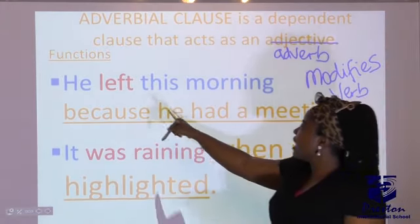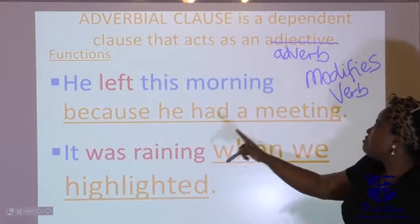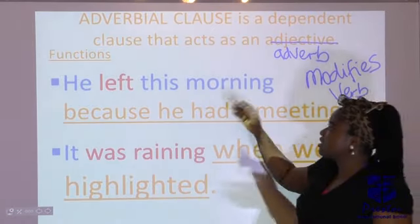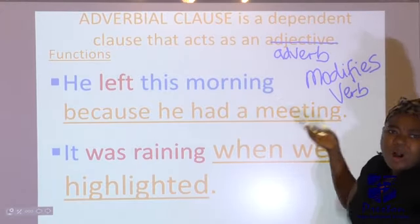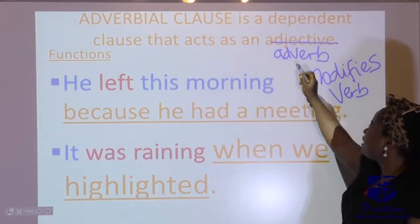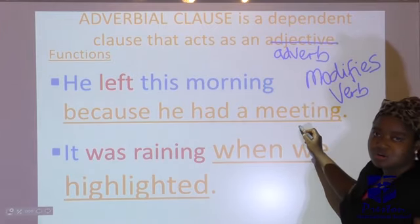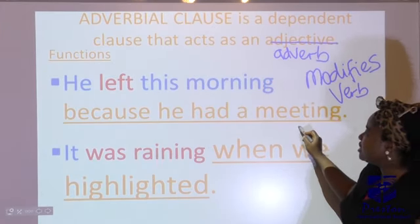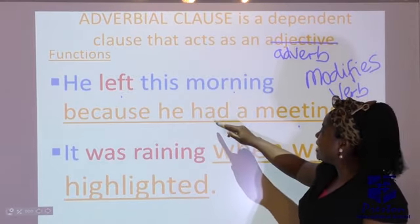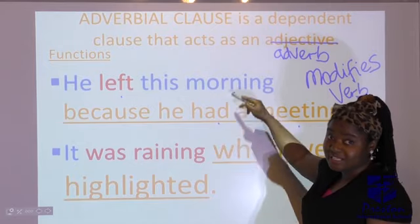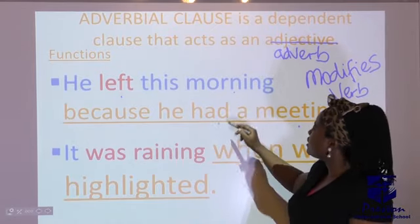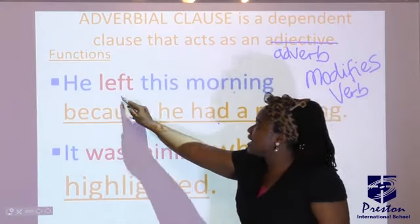In this sentence: 'He left this morning because he had a meeting.' Why did he leave this morning? Because he had a meeting — that is an adverbial clause of reason. It is not telling us more about 'morning'; it is telling us more about why he left. It stands in a similar position to an adjective but tells us the reason he left, not when.